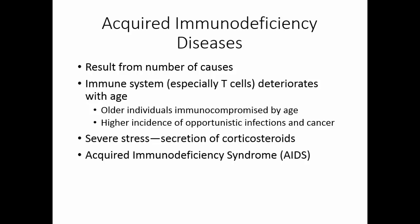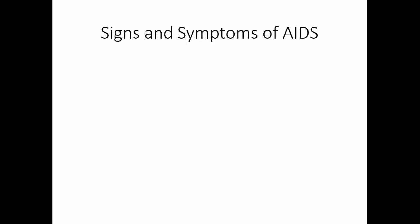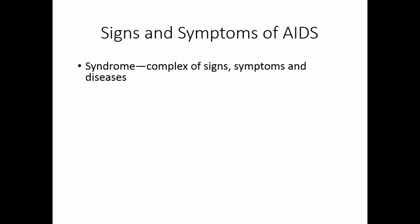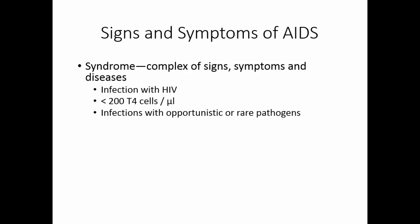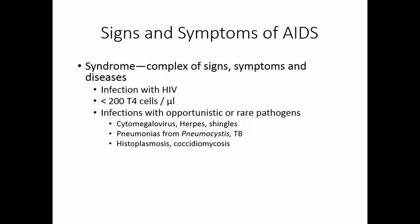And then we have acquired immunodeficiency syndrome, or AIDS. AIDS is a syndrome — a complex of signs, symptoms, and diseases. The individual has to have an infection with HIV, a T4 cell count of less than 200 per microliter, and they show infections with a variety of opportunistic or rare pathogens. Things like cytomegalovirus, herpes, or shingles in relatively young people; pneumonias from Pneumocystis or reactivated tuberculosis; histoplasmosis or coccidioidomycosis, which are fungal diseases of the lung; chronic diarrhea from Cryptosporidium.